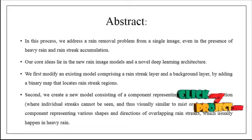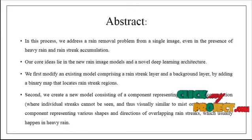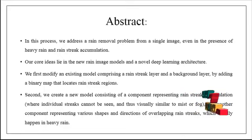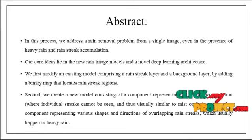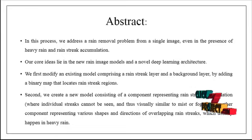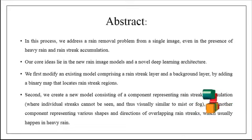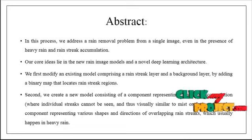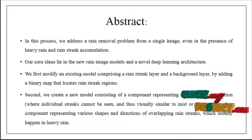By using this binary map, we can exactly identify where the rain streak is present and where it is not. Second, we create a new model consisting of a component representing rain streak accumulations, where individual streaks cannot be seen and are thus visually similar to mist or fog. Another component represents the various shapes and directions of overlapping rain streaks, which usually happen in heavy rain. We segregate the background and foreground separately — the foreground is the rain streak region.